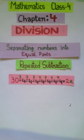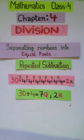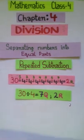So mathematically we can also write it as 30 divided by 4 equals to 7 is the quotient and 2 being the remainder.